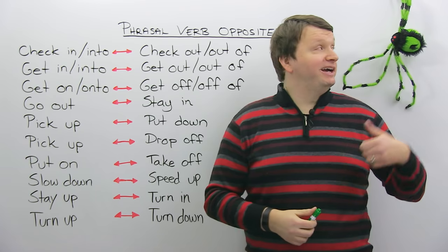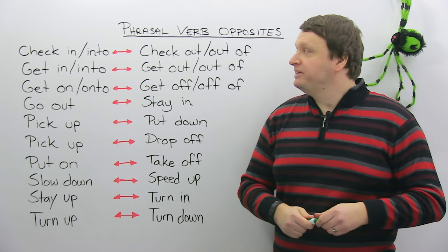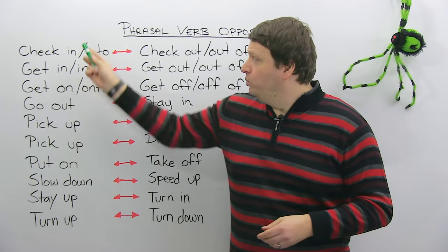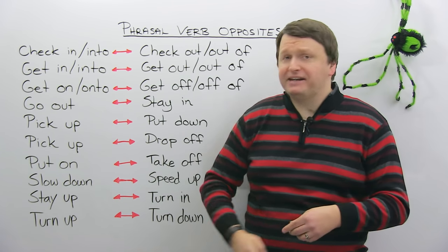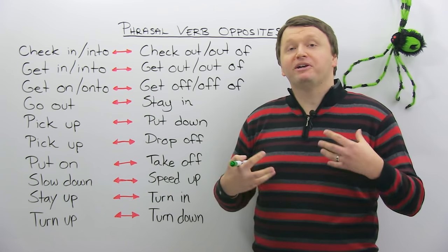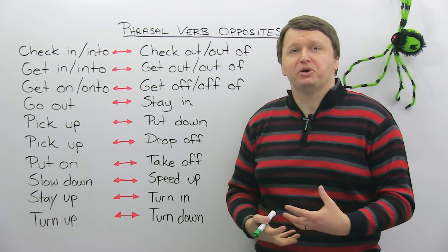So today, with the help of my friend Steve the Spider, I am going to look at how many? 1, 2, 3, 4, 5, 6, 7, 8, 9, 10. 10 phrasal verbs and their opposites for a total of 20 phrasal verbs.